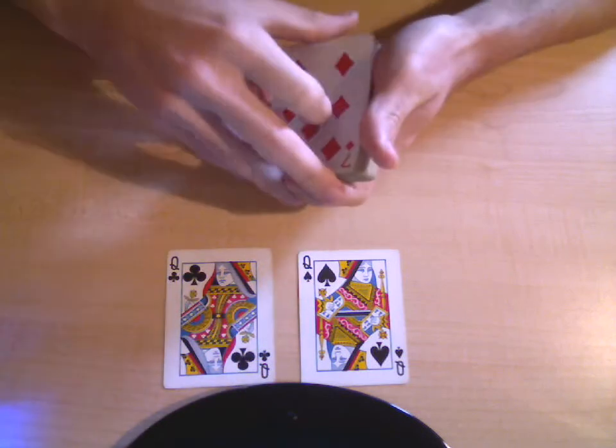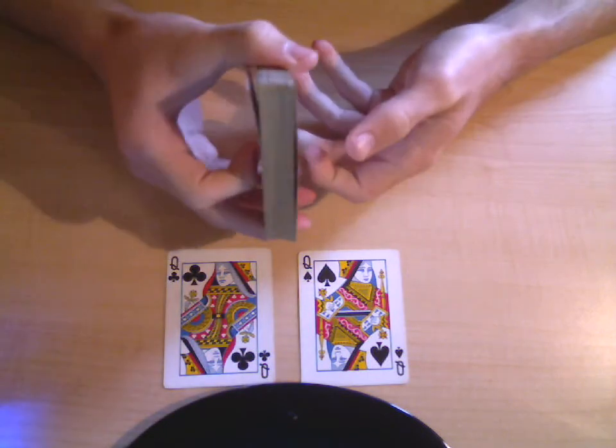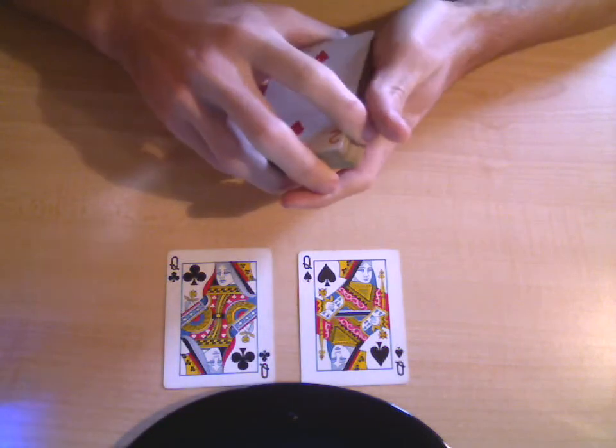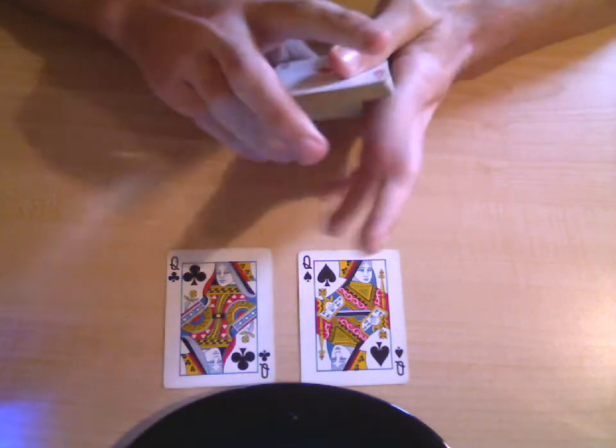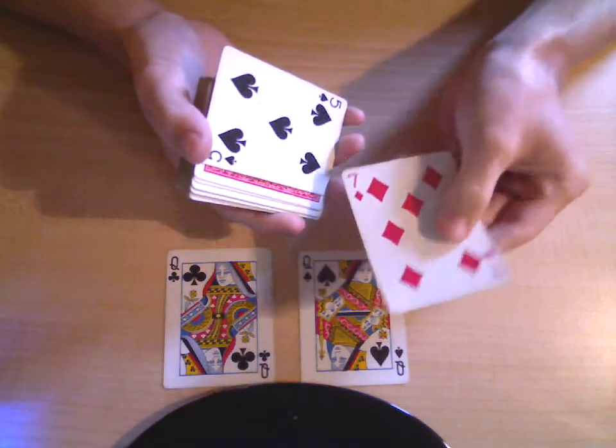And then you do a double undercut and you get this card to the bottom. So what you do is you get a pinky break, move half the pack to the top, keep that break, and move the rest of the cards to the top. So then you have an indifferent card and then their card.